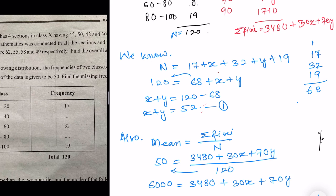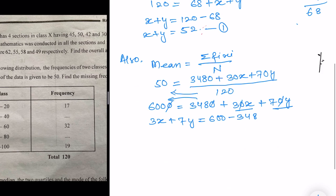Since all terms have a factor of 10, we can cancel zeros and simplify: 3x + 7y = 600 − 348 = 252. This is Equation 2. We now have Equation 1 (x + y = 52) and Equation 2 (3x + 7y = 252) to solve simultaneously.